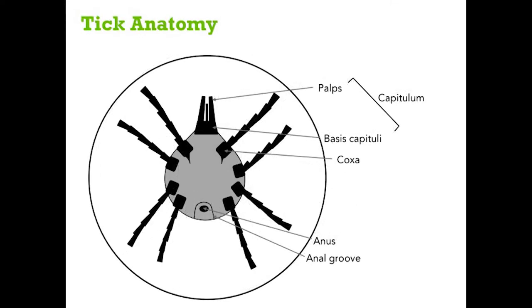If you flip the tick over, again you can see the capitulum. You can also see the coxa, which are the structures where the legs attach to the base of the tick. And finally, you can see the anus and the anal groove, which I know sounds funny, but these features are surprisingly important for tick identification.